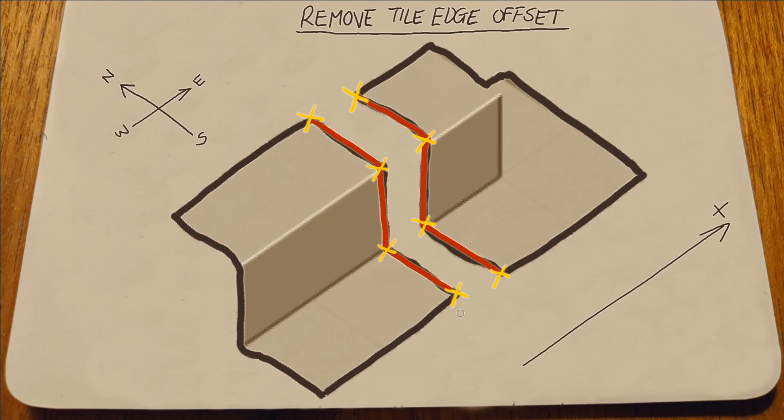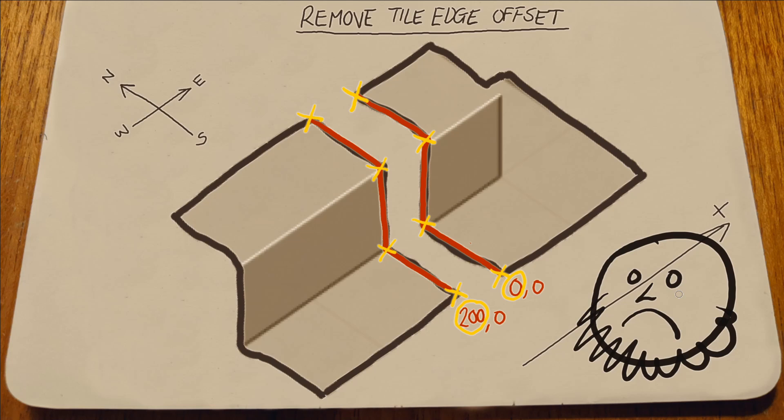The second problem I had was when I was making the edges, I was not removing the offset. This edge here is at x200 and this edge is at x being 0. So those two hashes would never be the same. You need to remove the offset for the tile's edge, so that here, an edge only becomes a list of z and y values.